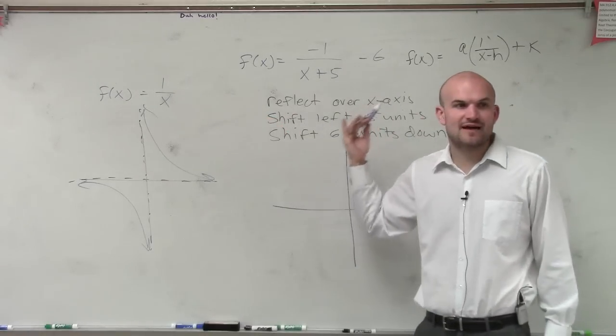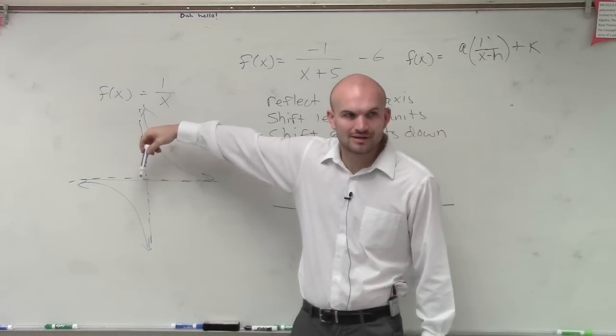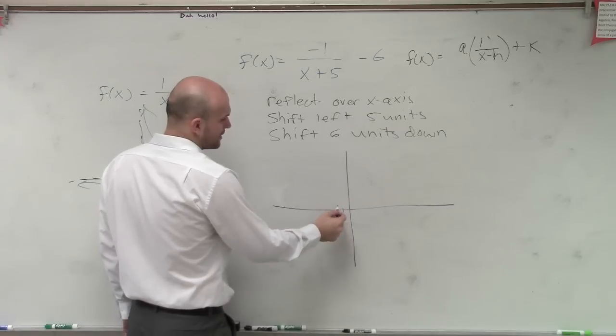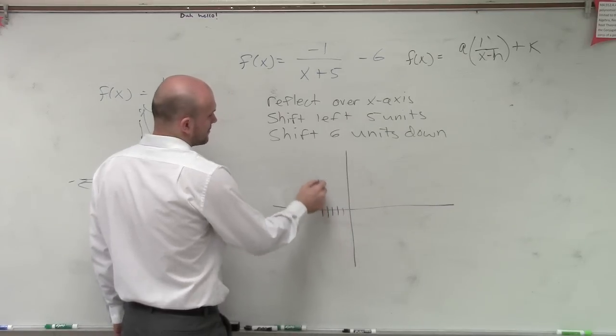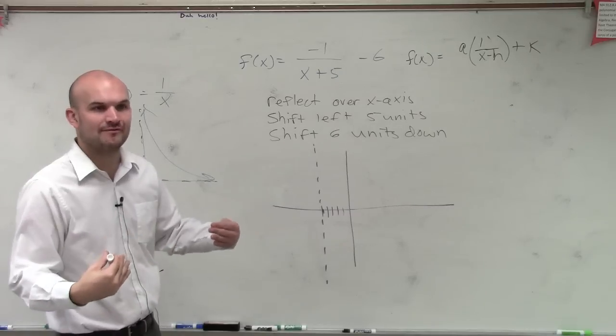So it says I need to shift 5 units to the left. So we know there's an asymptote at y equals 0. Let's just shift that 5 units to the left. So now I have it at 1, 2, 3, 4, 5.